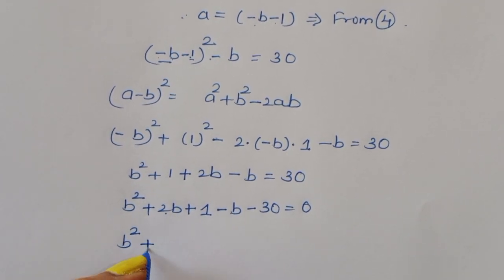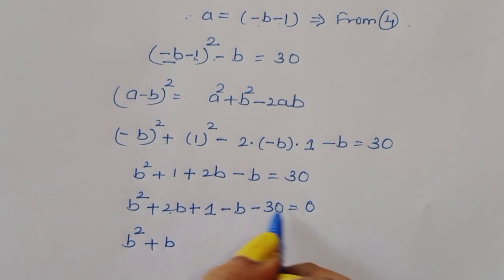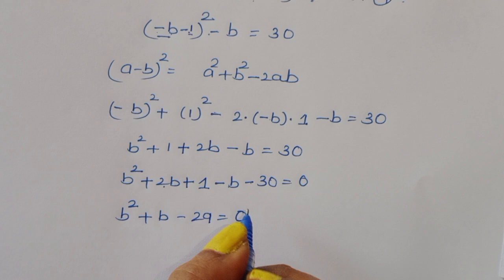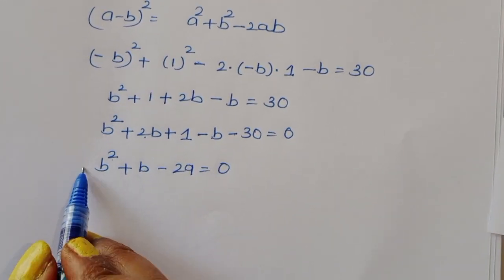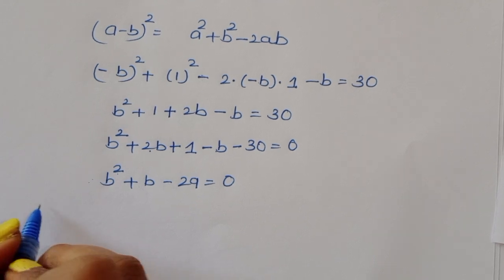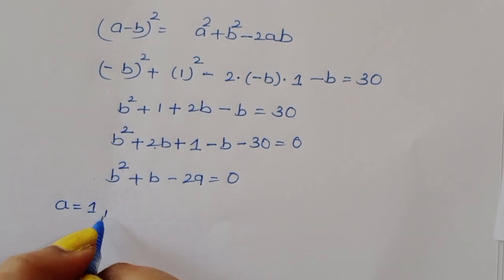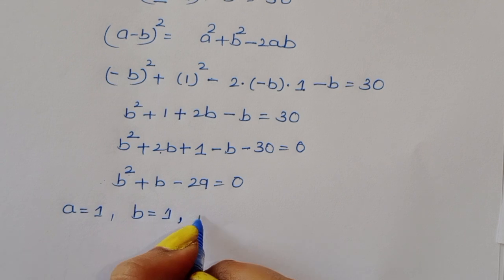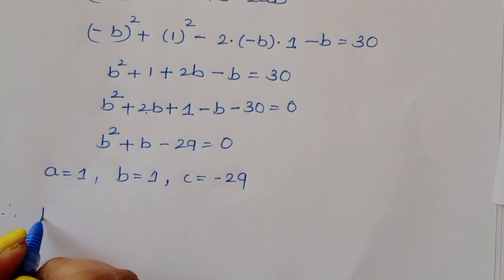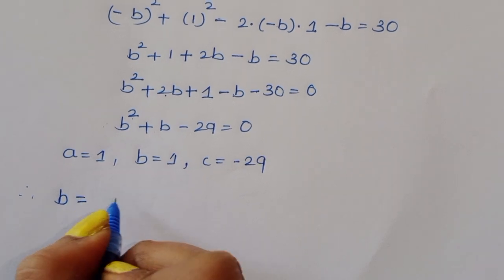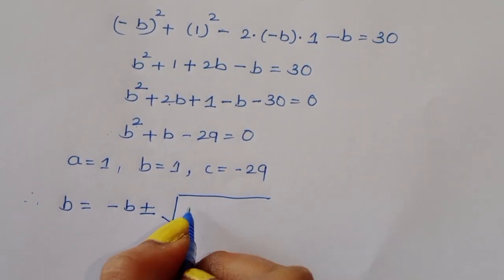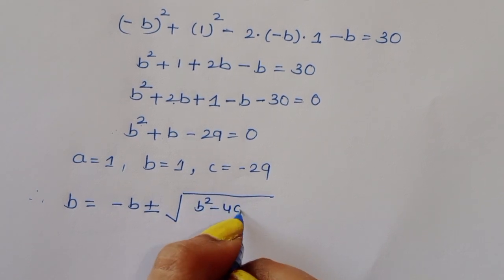This simplifies to b squared plus b minus 29 equals 0. Using the quadratic formula with coefficients a equals 1, b equals 1, and c equals minus 29.